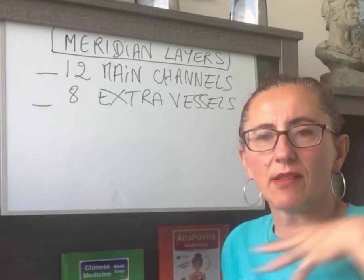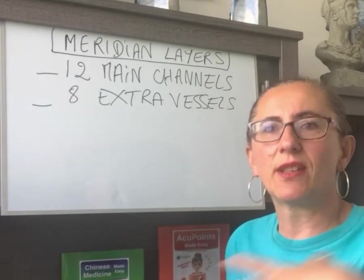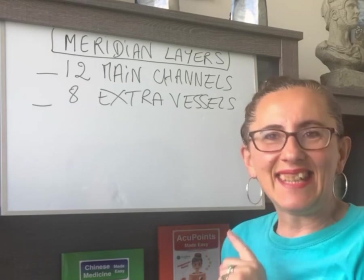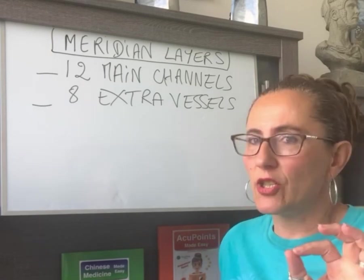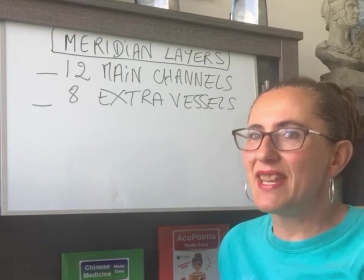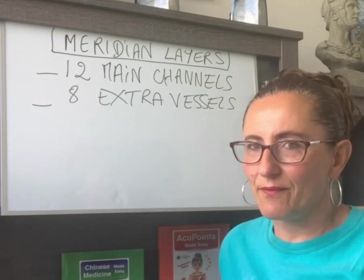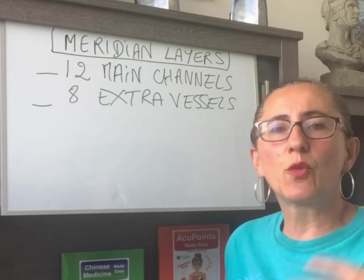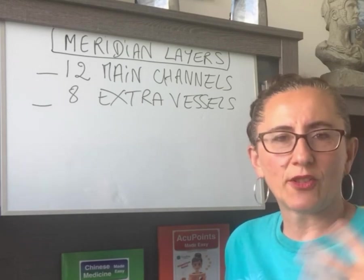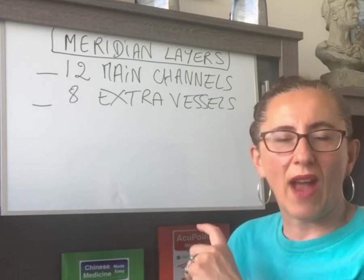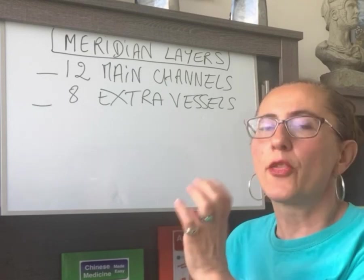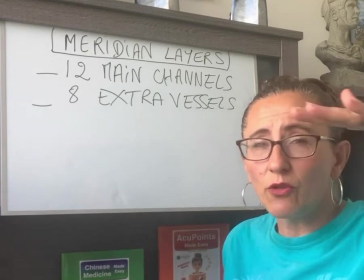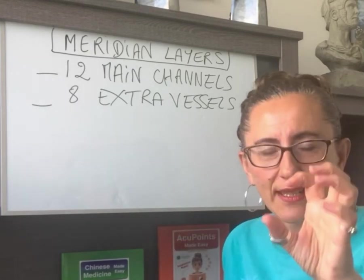The main function of the 12 meridians is to carry qi and to carry blood. The eight extra vessels' function is to carry essence. That's how we connect to essence. In order to protect our essence — our jing or kidney essence — we access them through the eight vessels. So those are the deepest meridians.